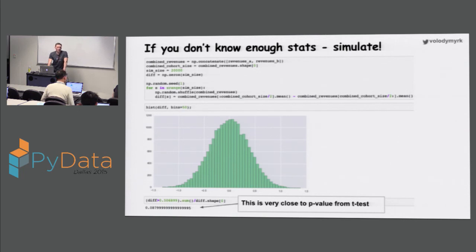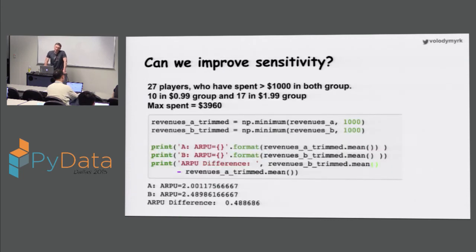So now VP of Marketing is saying, well, we definitely noted that we converted more users, and that's significant. But now you're telling me that revenues are not significant, so maybe actually we should go with a lower price point so we have more paying users. There are a few tricks that we can try to apply. And generally, this problem is really hard. And I actually haven't found one single solution that works in all cases. But one thing that we can do is that we note that we have, in this fake data, 27 players who spent more than $1,000 in the first 30 days. And it's not an unheard of number. Some people do spend crazy money in those online games.